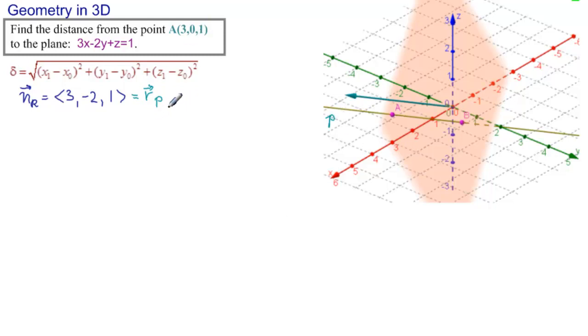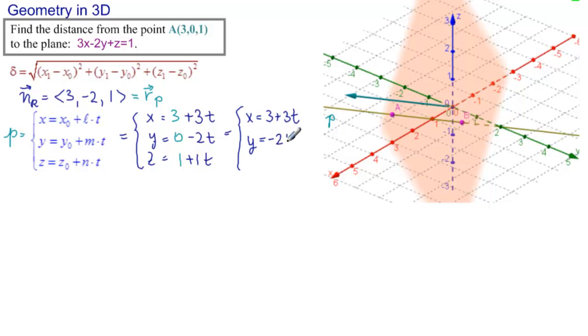Now we have a point and a directional vector. That makes P equal to, and let's put this in parametric form like usual, so we have x, y, z equal to our coordinates of our point, 3, 0, 1, and then we write in these from the normal vector. So, plus 3t, minus 2t, and plus 1t, and that gives us the equation of P is x equal to 3 plus 3t, y equal to minus 2t, and z equal to 1 plus t.